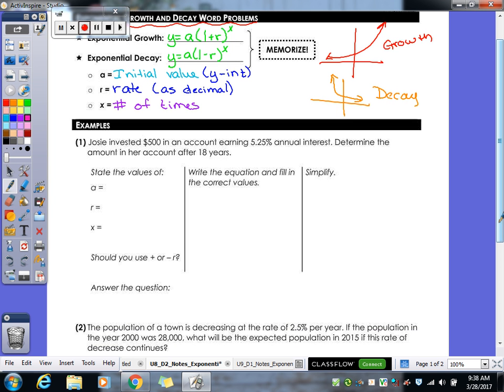So let's take a look at our first question. We have Josie invested $500 in an account earning 5.25% annual interest. Determine the amount in her account after 18 years. So let's go through what we know. A, as I said, is our initial value. So how much did she start with? So A is 500. R is her rate. So what they tell us is it's 5.25%. But we have to change our percent into a decimal. Move your decimal two places to the left. So that means I'm going to fill in this space with a zero. We're really using .0525. That's our 5.25% as a decimal. So our X, since it's annual interest, that means she earns it once a year for 18 years. So X would be 18.